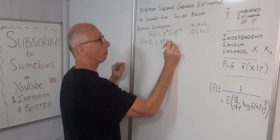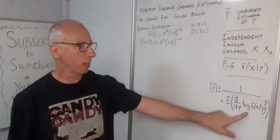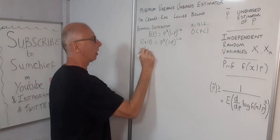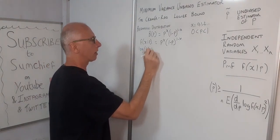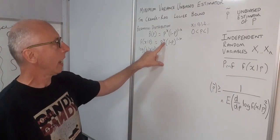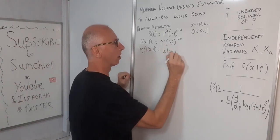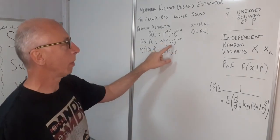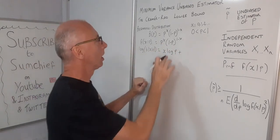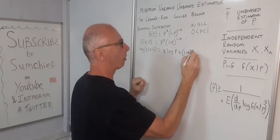The PMF is P to the X times 1 minus P to the 1 minus X. Taking the log of F of X given P, and using log properties, this becomes X times log of P, plus 1 minus X times log of 1 minus P.